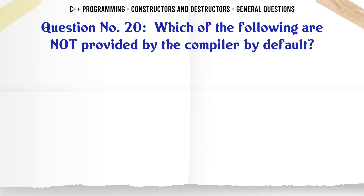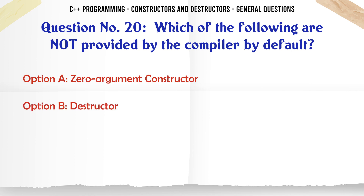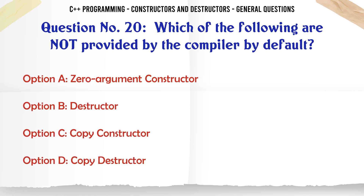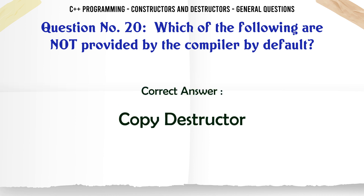Which of the following are not provided by the compiler by default? A. A zero argument constructor. B. Destructor. C. Copy constructor. D. Copy destructor. The correct answer is Copy destructor.